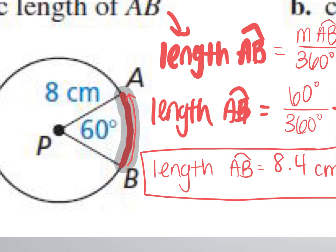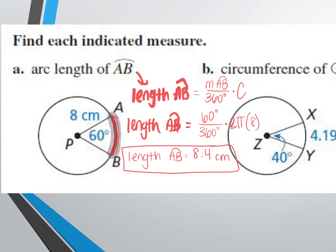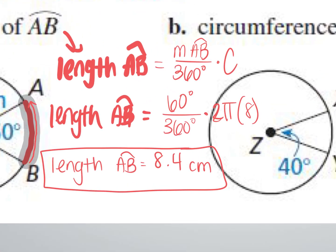Cody asks: you use 2πr since it gives you 8 centimeters? Correct — because it gave us a radius, not a diameter. You could multiply it by 2 and use pi times diameter instead. You can use either one; I'm just going to use whichever value is given to me. Good question.